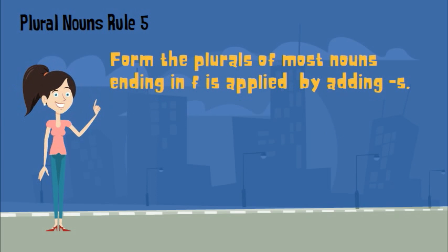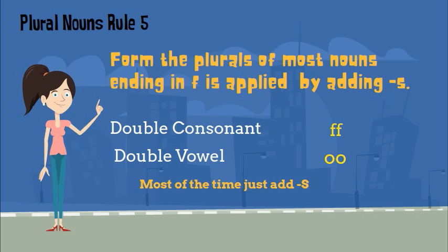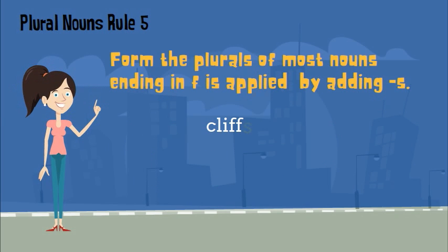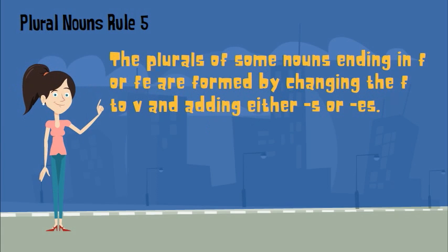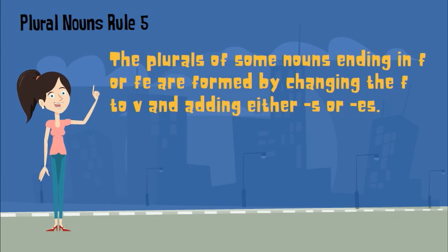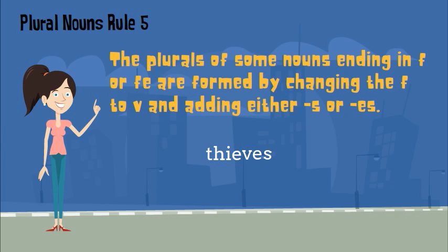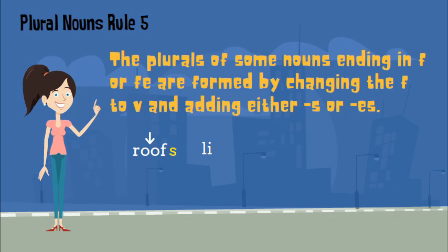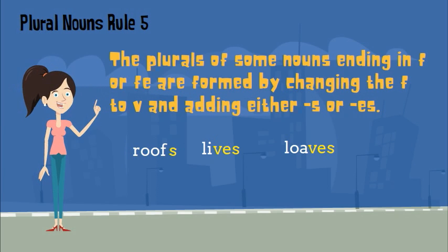Another rule to form the plurals of most nouns ending in F is applied by adding S. If you see any double consonants or vowels, most of the time you just add an S at the end, such as cliff — cliff becomes plural by just adding an S. But the plurals of some nouns ending in F or FE are formed by changing the F to V and adding either S or ES. Like the example thief, it becomes thieves. Notice how roof has doubles, so to make it plural I would just add an S. But for the word life, I would drop the FE and add VES for lives. For loaf, I don't see doubles, so I would drop the F at the end and add VES for loaves.